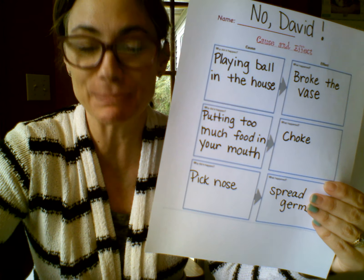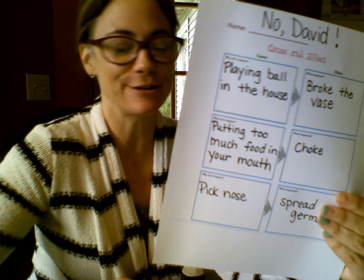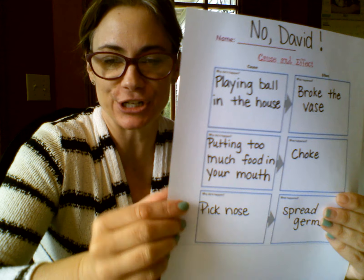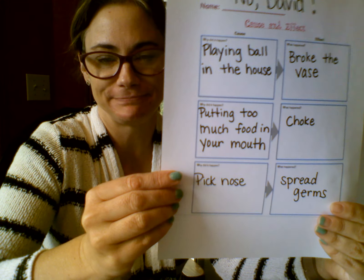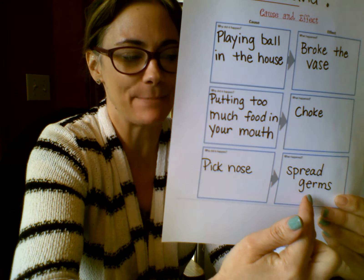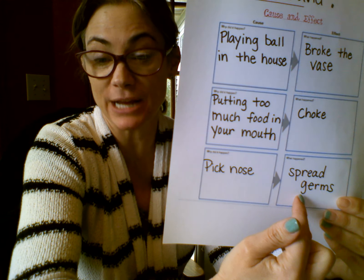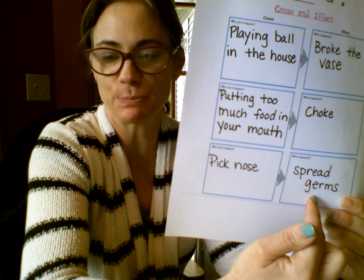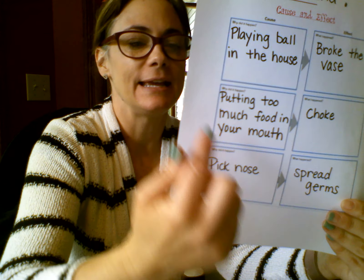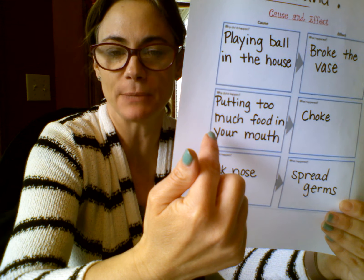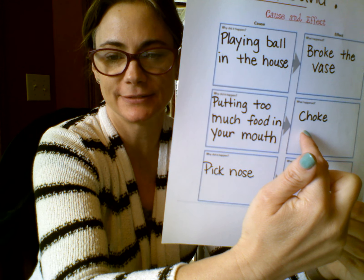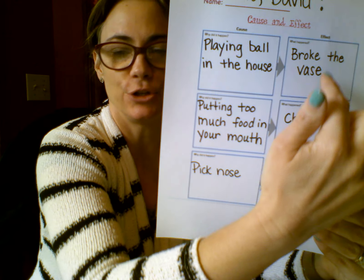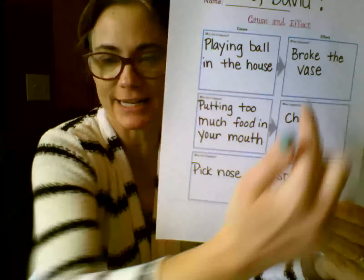And the last one I picked: he was picking his nose. His mom's like, 'No, that's gross.' Why wouldn't she want him to pick his nose? It would spread germs. So if you pick your nose, you'll spread germs. If you put too much food in your mouth, you would choke. If you played ball in the house, you would break something. See how these work together?